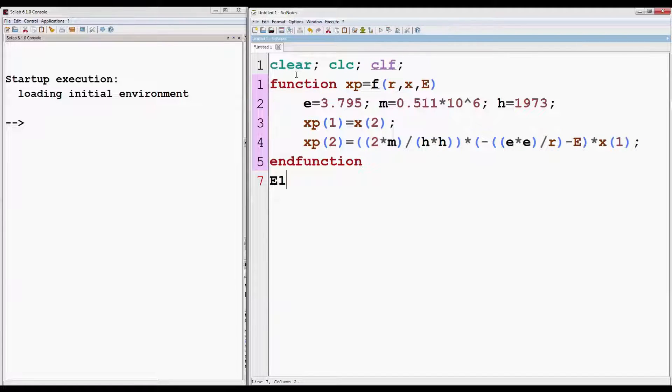Next, write the two first order differential equations as already discussed and are also shown on left. Now E1 is the trial energy that the program will ask for when we will execute it. So it's a kind of input that we are going to give and its format is this. E1 equal to input bracket within quotation. Enter guess for energy.